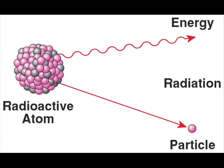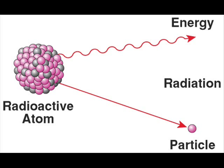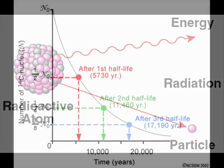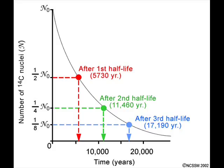and uranium-235 have the tendency to break apart in a process called decay. We can't tell when a certain atom will decay, but we can tell when a fraction of them will. A half-life is the time it takes for half the atoms in a piece of radioactive material to decay.